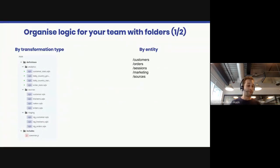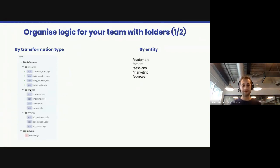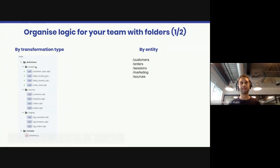One of the first things to think about when starting your Dataform project is how you're going to organize it. We typically see two main ways of organizing a project. The very basic folder organization is to have folders by transformation type — sources where you make transformations against your sources, staging for tables managing data in transit, and then analytics, which are the tables you'll publish in your BI tools for business users.